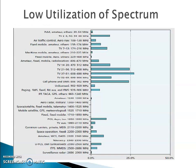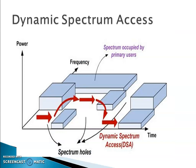Looking at spectrum utilization, you can see from the picture that many devices have used the spectrum in a low percentage. Secondary users have the capability to use a concept called dynamic spectrum access. In dynamic spectrum access, whenever a secondary user is occupying a particular spectrum and the primary user comes back, the secondary user has to switch and find other vacant spaces. These vacant spaces are called spectrum holes, and this process is called dynamic spectrum access.